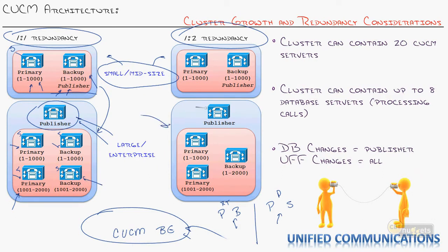Now look at the one-to-two redundancy model. The publisher is again dedicated. We have two primary subscribers — one for phones 1 through 1,000 and one for phones 1,001 to 2,000 — and a single backup for both. We're making a bet that we don't lose two servers at the same time. If you design your network correctly — servers not on the same UPS, avoiding those basic design mistakes — that's normally a safe bet, and it can be very cost-effective.